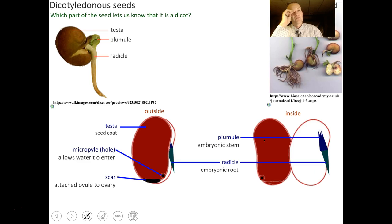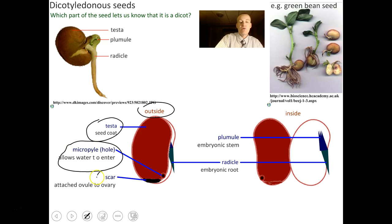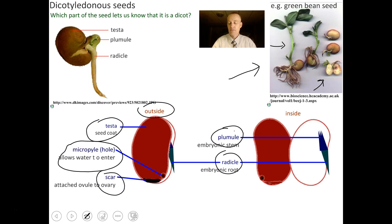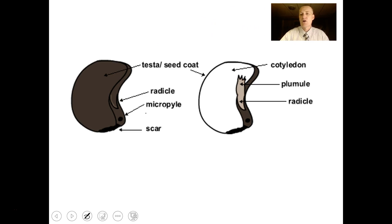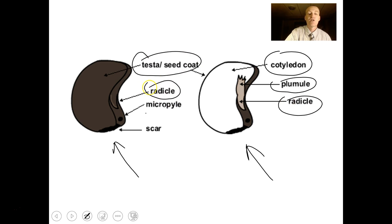Looking at a dicot seed: on the outside you have the seed coat as a protective covering, a small hole called the micropyle that allows water to enter, and a seed scar where the seed was attached to the parent plant. Inside you can see the plumule — the embryonic stem — and the radicle — the embryonic root. Be able to draw and label a seed including the cotyledon, embryonic stem, embryonic root on the inside, and seed coat, radicle tip, micropyle, and seed scar on the outside.